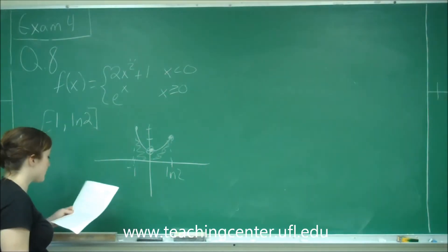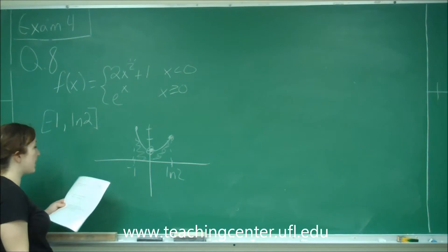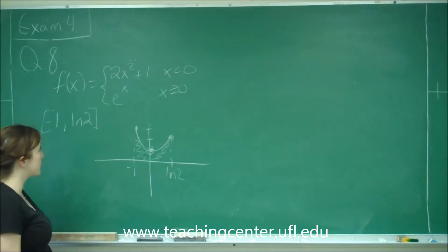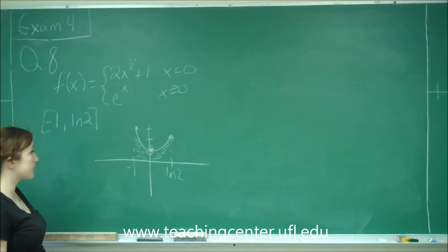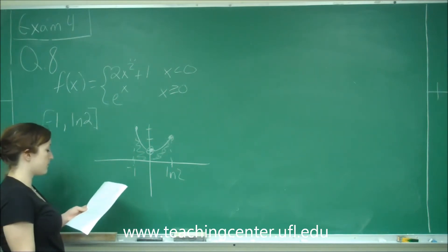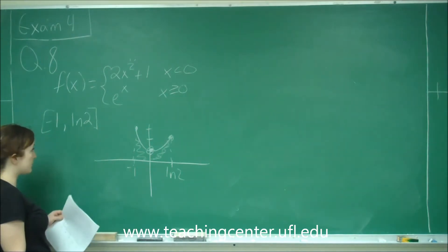This is question number 8, and it wants us to find the area of the region bounded by f of x equals the piecewise function 2x squared plus 1 when x is less than 0, and e to the x when x is greater than or equal to 0, and the x-axis on the interval from negative 1 to ln of 2.